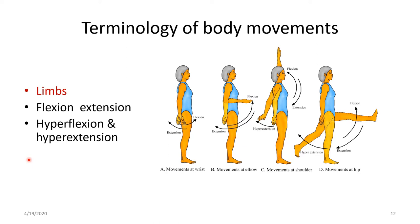Let us look into the terminology of body movements. In the case of limbs, the movements are flexion, extension, hyperflexion, and hyperextension. You can see the movements at the wrist — flexion and extension; at the elbow — flexion and extension; at the shoulder — flexion, extension, and hyperextension; and in the case of the hip joint — flexion, extension, and hyperextension movements.